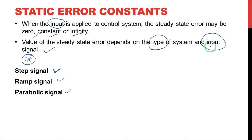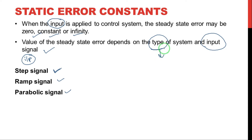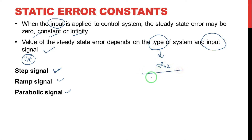You know that the input signals are three types: step signal, ramp signal, and parabolic signal. Now, what do you mean by the type of the system? How do you identify the type of the system? In case there is a transfer function — for example, (S² + 2) divided by S(S² + 2S + 3) — observe the denominator clearly.